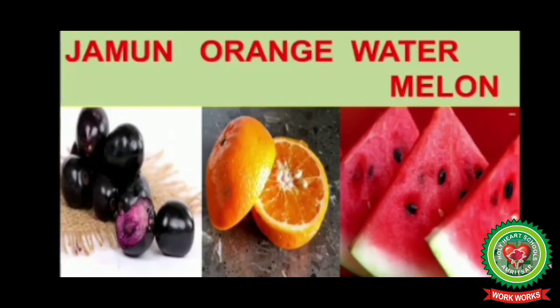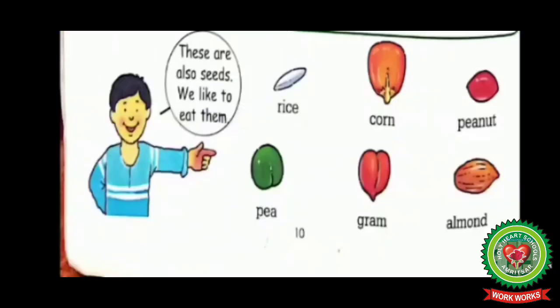Jamun, also known as blackberry, has only one seed — tick jamun. Orange has few seeds. Watermelon has many seeds. These are also seeds and we like to eat them.